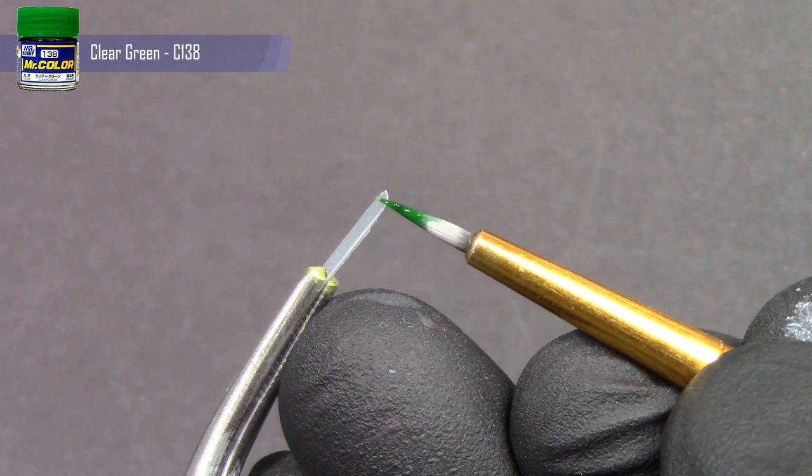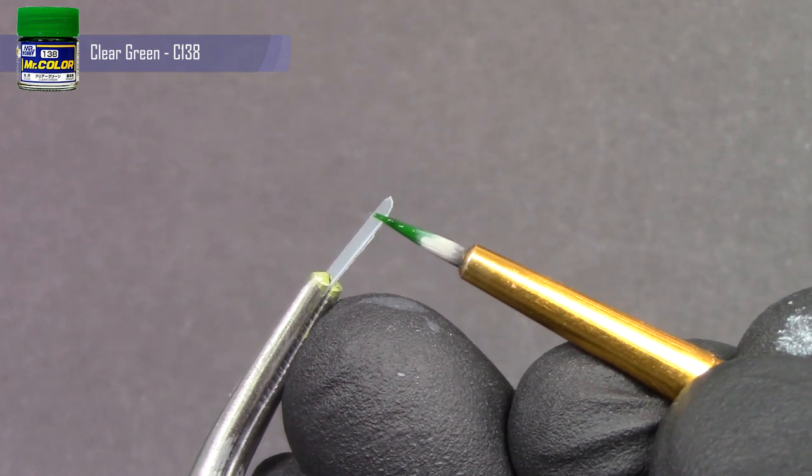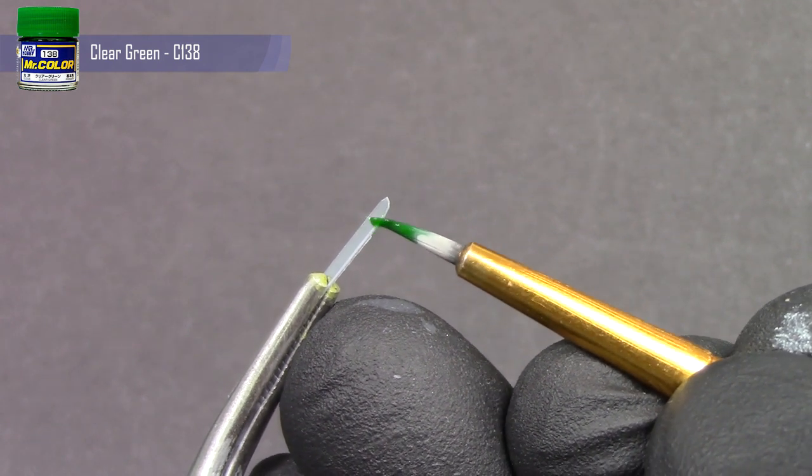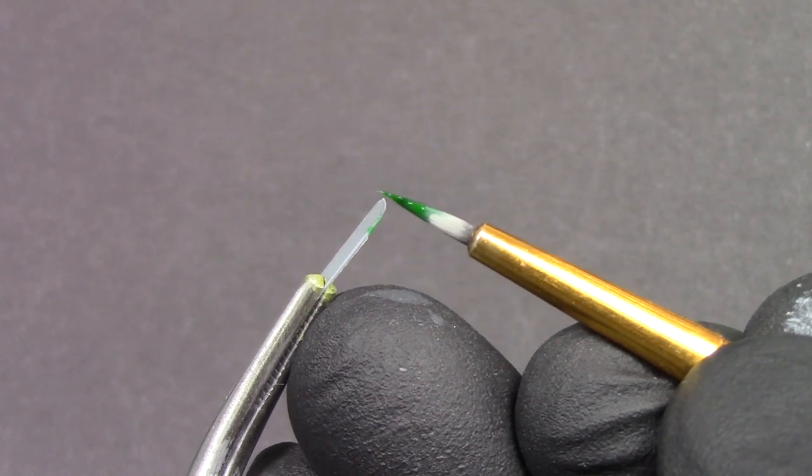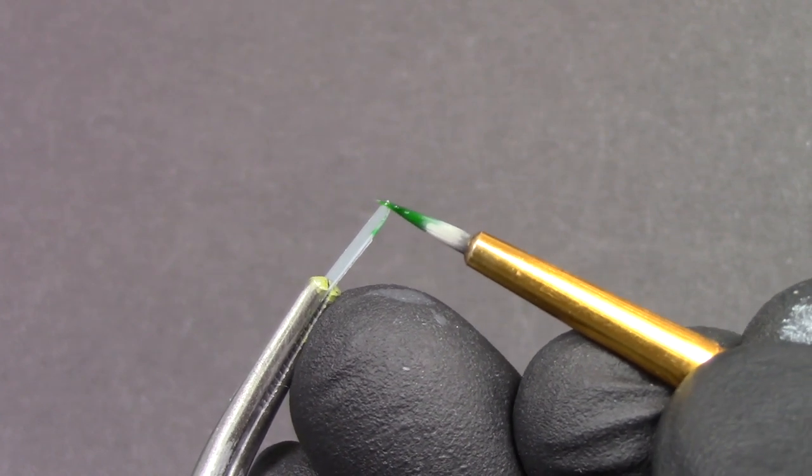Now to make this part look more like a thick piece of glass rather than a thin piece of glass, I paint the edges with clear green paint or clear blue paint.